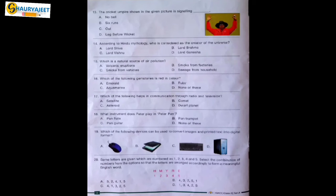Question 20: Some letters are given, numbered 1, 2, 3, 4, and 5. Select the combination of numbers from the options so that the letters are arranged to form a meaningful English word. Option C — the combination 4, 1, 3, 2, 5 — makes the meaningful word 'rhyme.'